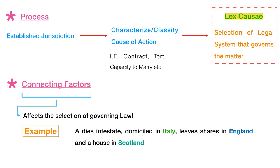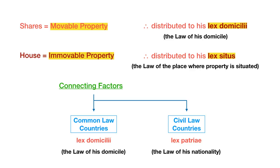For instance, many of the matters pertaining to conflict of laws in relation to intestate succession will be considered based on movable as well as immovable property. In the case of shares, which amount to movable property, the distribution may be according to his lex domicili, or the law of his domicile. As opposed to a house, which is immovable in nature, where the distribution usually occurs according to lex situs, or the law of the place where the property is situated. These are some of the connecting factors that we might have to discuss throughout this particular course.